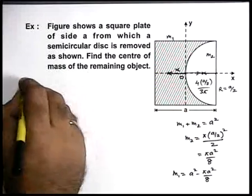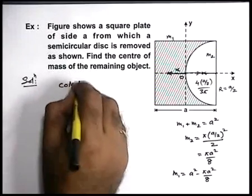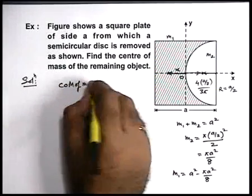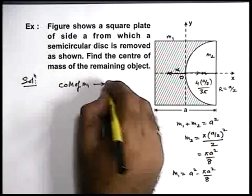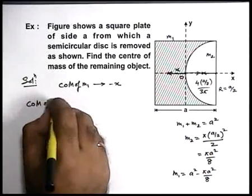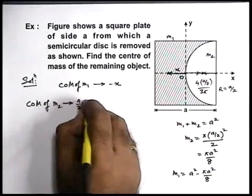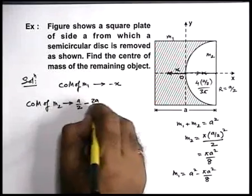So here we can write in the solution, center of mass of m1 will be located at a distance minus x, and center of mass of m2 will be located at a distance a by 2 minus 2a upon 3π.